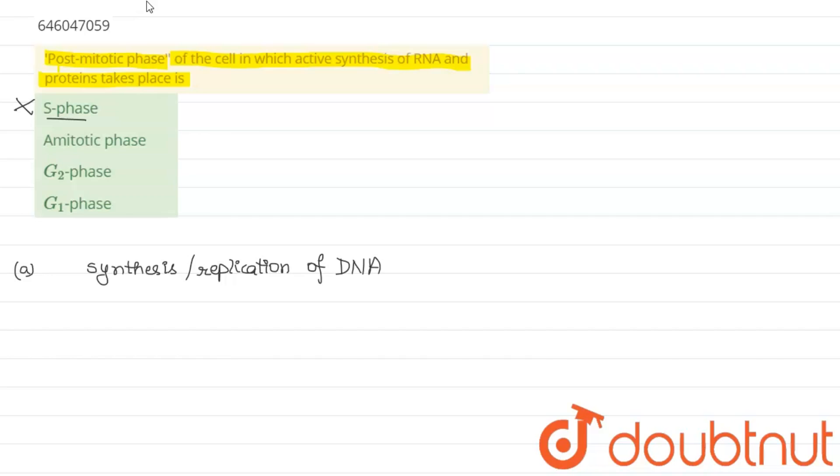Coming to the second option, we have the amitotic phase. So amitotic means no mitosis, so this option is also wrong.